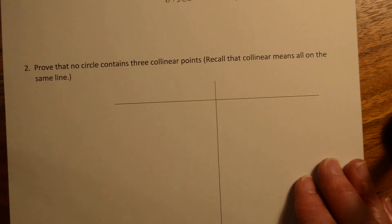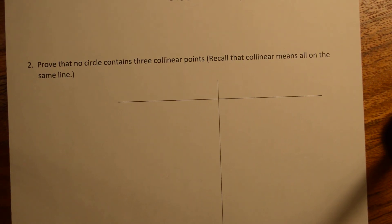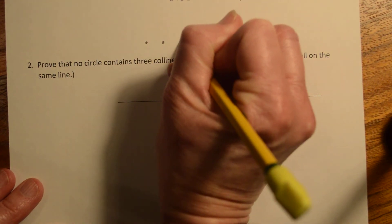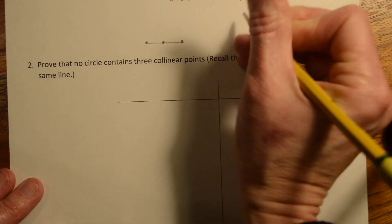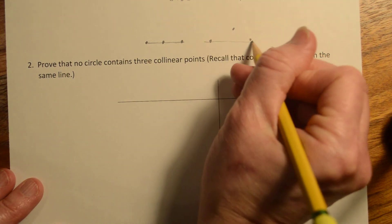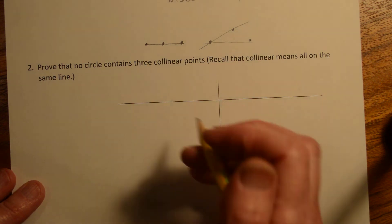Problem two that we're going to look at says, prove that no circle contains three collinear points. And remember that collinear means they all have to be on the same line. So for example, these three are collinear because they all lie on the same line. These three are not collinear because there's no single line that can go through all of them. The line could go through two but not all three.